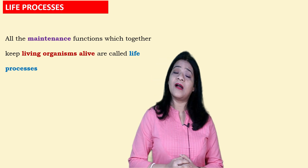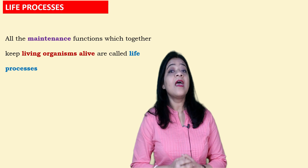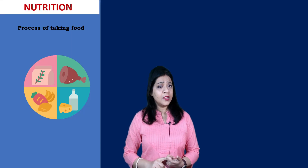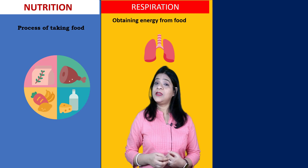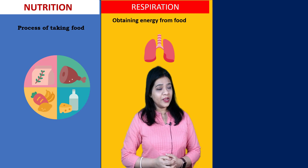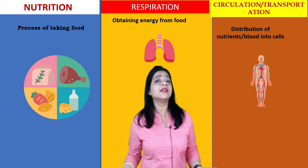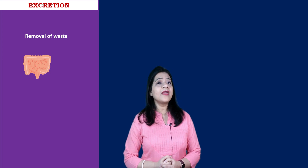These maintenance functions are called life processes, and they should be carried out throughout life. The life processes are categorized as: Nutrition — the process of taking food; Respiration — the process of obtaining energy from food; Circulation or Transportation — the process of distribution of nutrients or blood into different parts of the body; Excretion — removal of waste from the body; and Reproduction — the process of giving birth to similar ones. These are the vital elements of life processes.